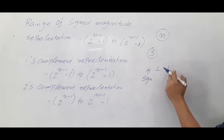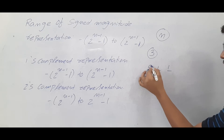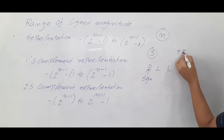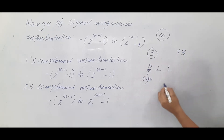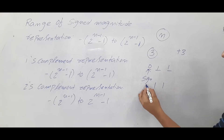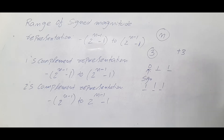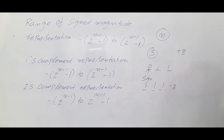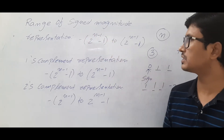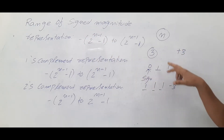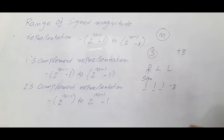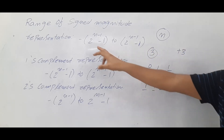If I keep the two magnitude bits as 11 and the sign bit as 0, this gives plus 3. The same way, if I keep the sign bit as 1 and the two magnitude bits as 11, it will be minus 3. So using sign magnitude representation with three bits, the maximum element is plus 3 and the minimum is minus 3.